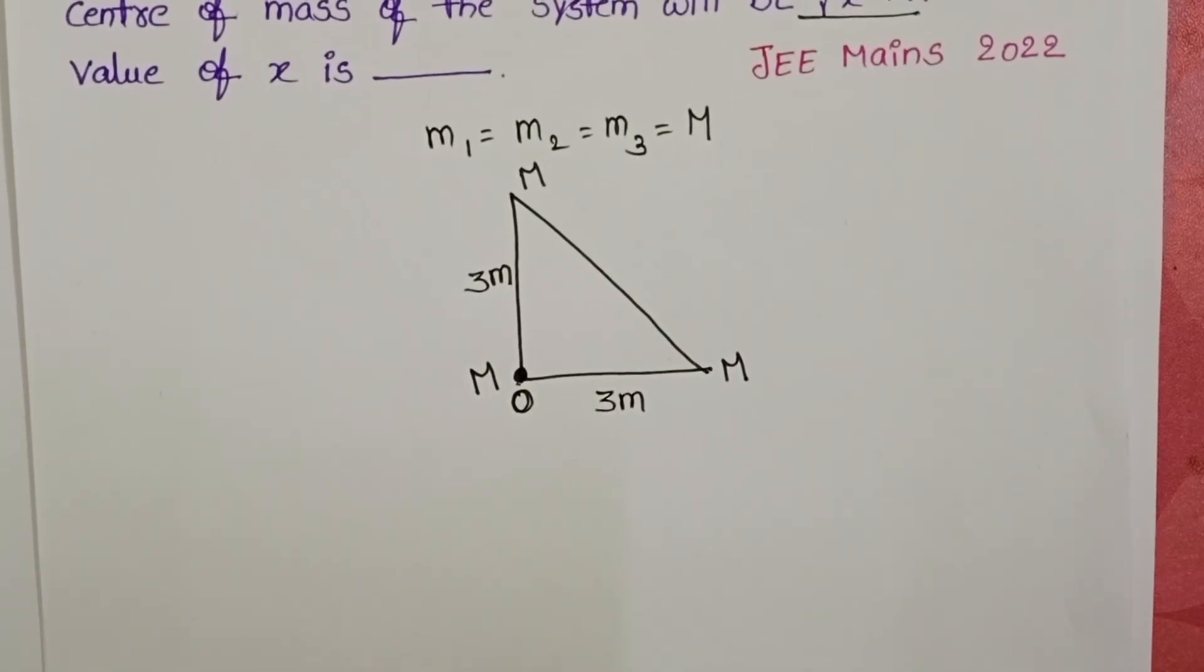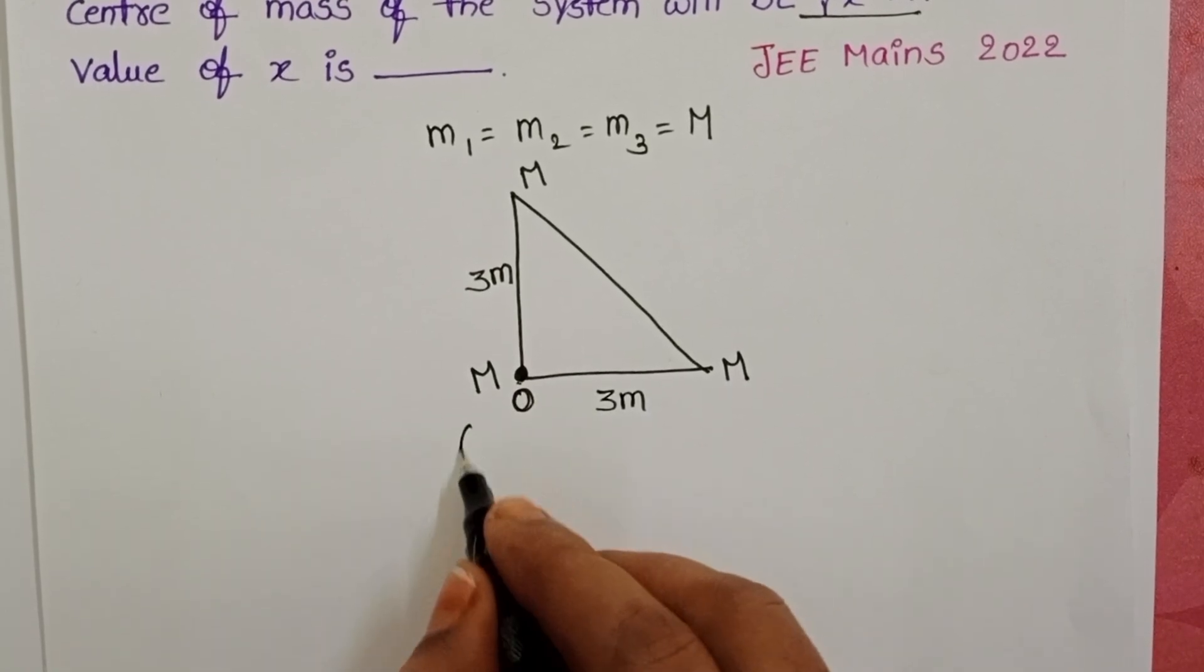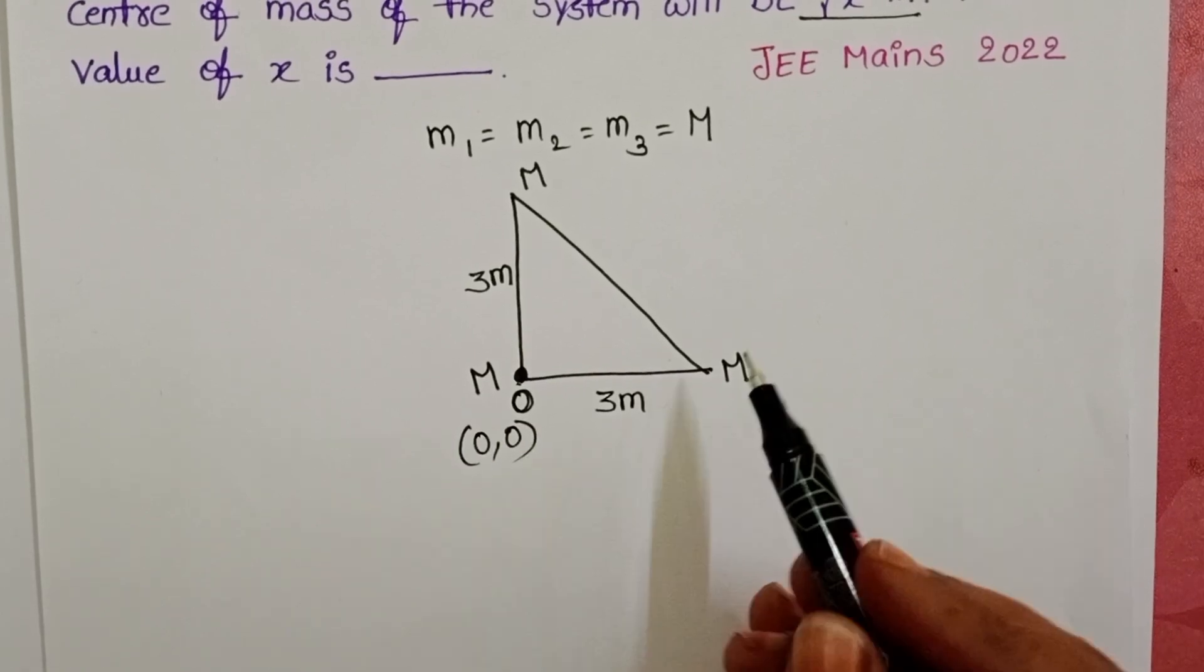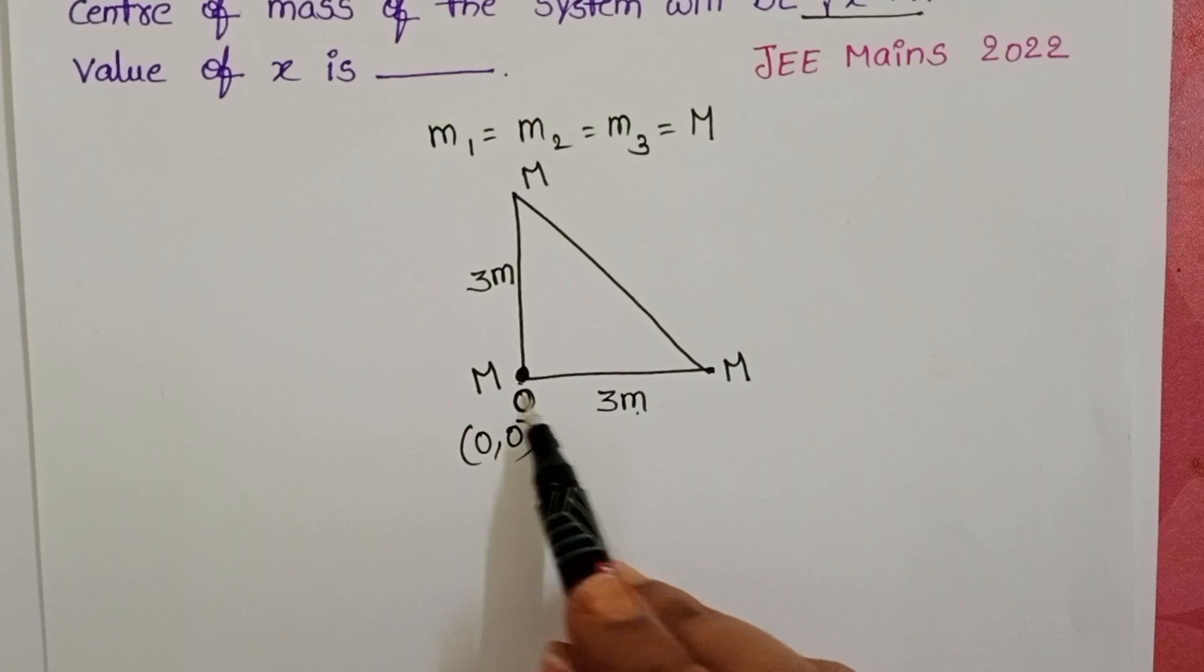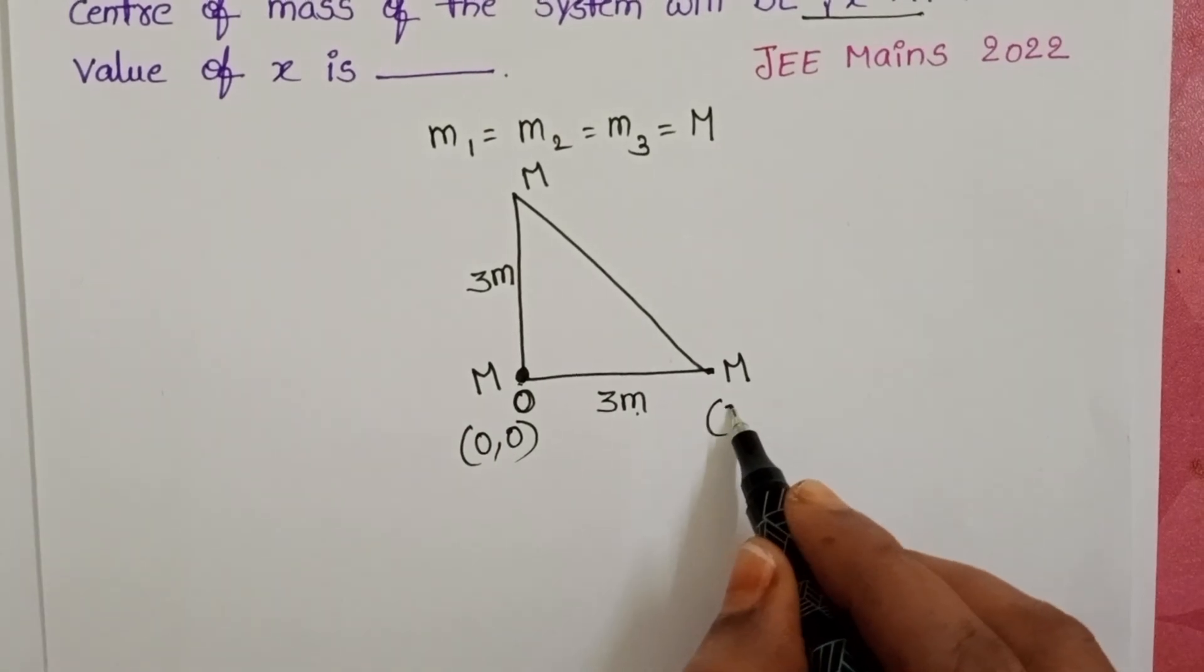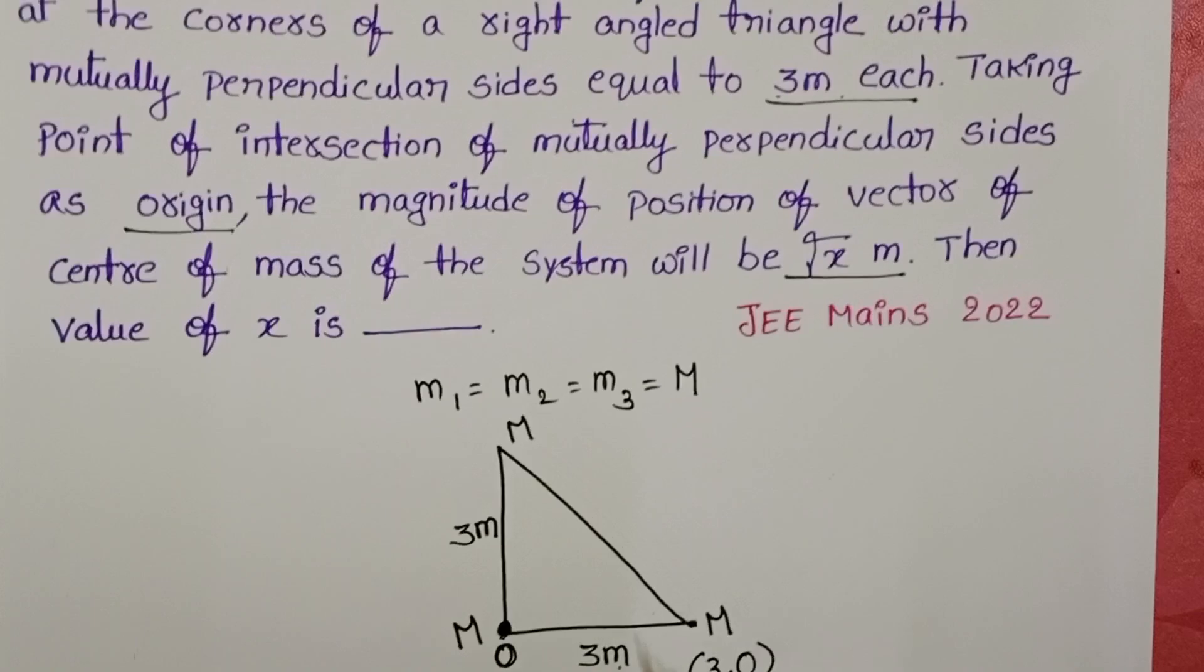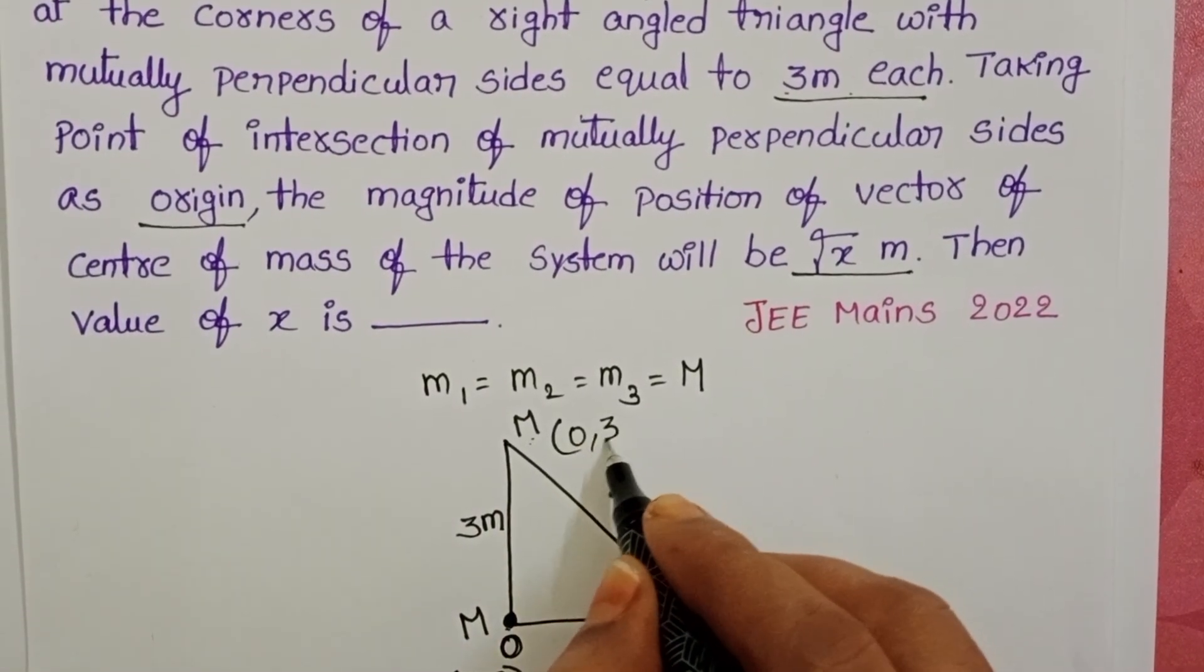Now, we want to find out the center of mass of the system. The coordinates of the first particle: x coordinate is 0 and also y coordinate 0. Second particle, this particle is placed 3 meters from the origin, so x coordinate is 3, y equals 0. And for the third particle, x coordinate is 0 and y is 3.